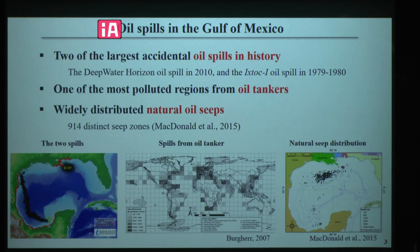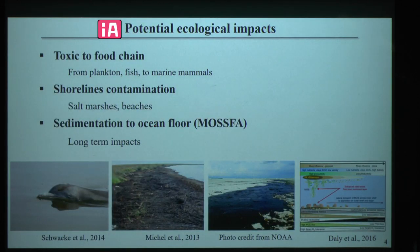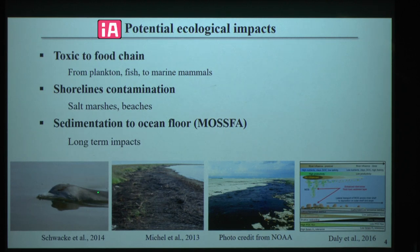Natural seeps have limited impact, while massive oil spills into the ocean may cause severe damage to the environment. Oil is toxic to multiple levels of the food chain and can contaminate shorelines and form sedimentation on the ocean floor. This may cause long-term impact to the benthic ecosystem.